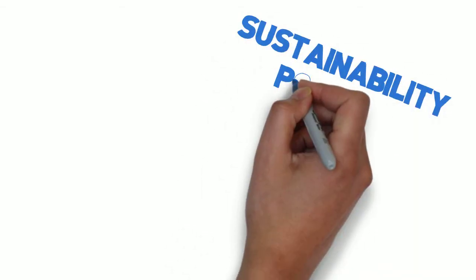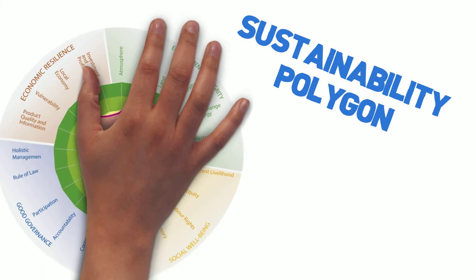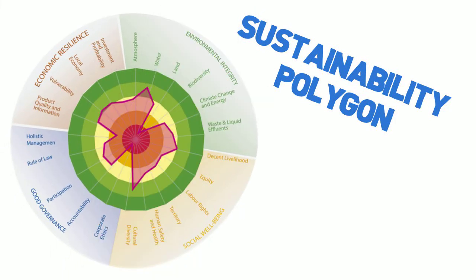The themes are reflected in a diagram called the sustainability polygon, which shows a visible and clear result that helps to detect strengths and weaknesses.